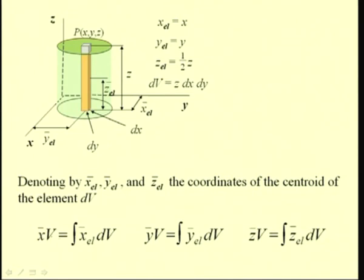The volume is z·dx·dy and we can find the locations of the centroid x-bar, y-bar, and z-bar by these integrals. That is, x-bar·V, where V is the volume of the cylinder, equals the integral of x-element-bar·dv, and the same way for the y and z coordinates of the centroid.